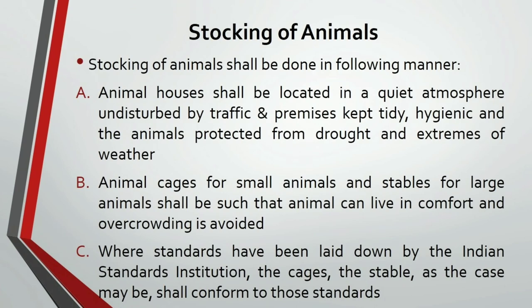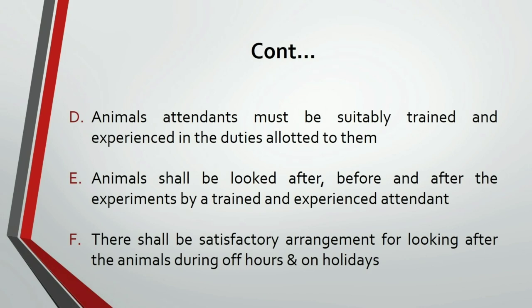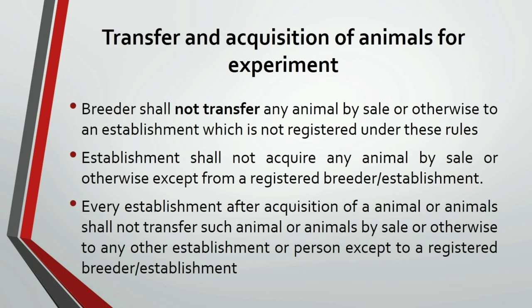Regarding the stocking of animals: it should be done in a proper manner. Animal houses shall be located in a quiet atmosphere undisturbed by traffic. Premises should be kept tidy and hygienic, and animals should be protected from drought and extremities of weather. Animal cages should be used for small animals and stables for large animals, and overcrowding should be avoided. Where standards are given by the Indian Standard Institution for cages or stables, they shall conform to those standards. Animal attendants must be suitably trained and experienced. Animals shall be looked after before as well as after the experiment, and arrangements should be made to look after animals during off-hours and on holidays.